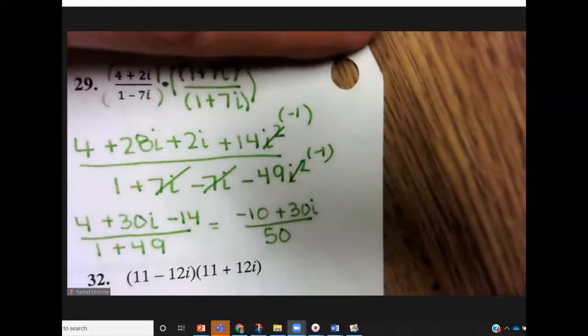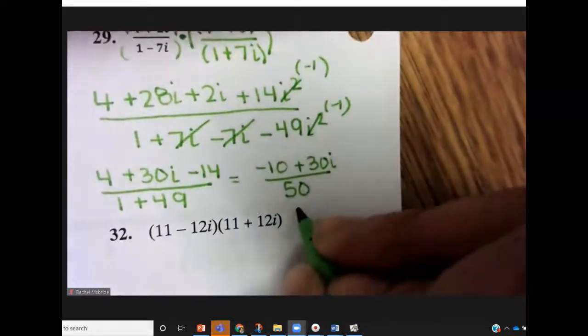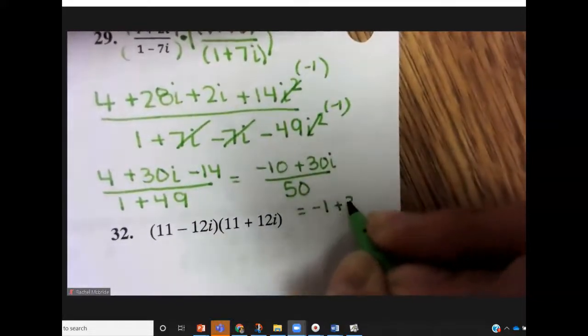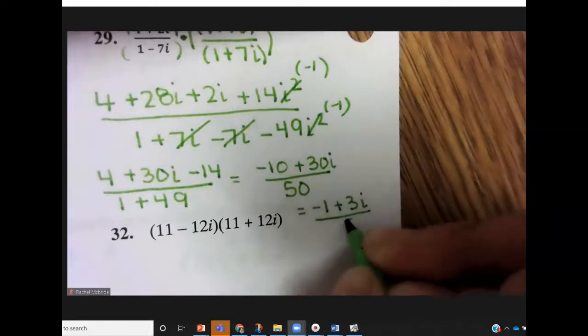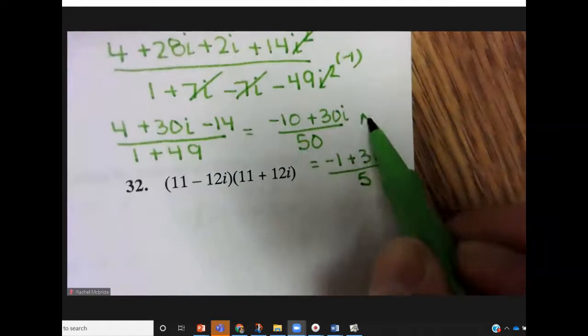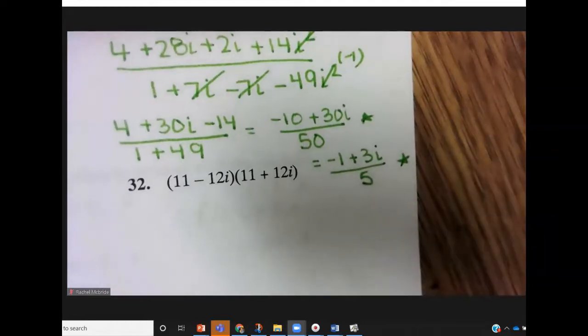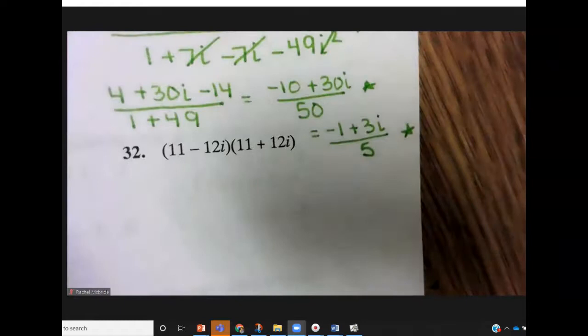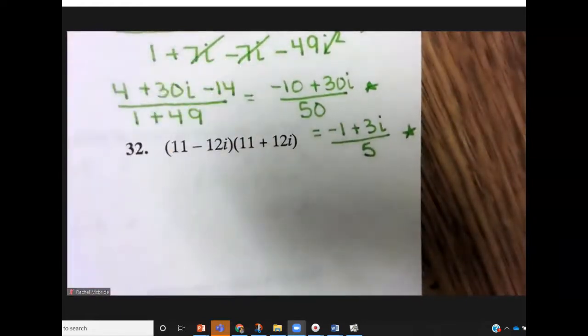So 4 minus 14 is negative 10 plus 30i all over 50. And you could take a 10 out of each of those terms. And you'd get negative 1 plus 3i all over 5. And again, either this answer or this answer are perfectly fine. But you do need to get down to one of the two of those.